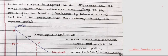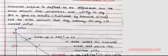Consumer surplus is the difference between the total amount consumers are willing to pay — as indicated by the demand curve — and the total amount which they actually pay, which is the market price that comes through the intersection of demand and supply.